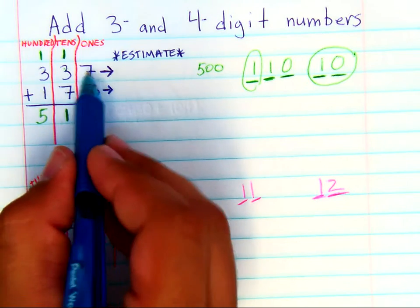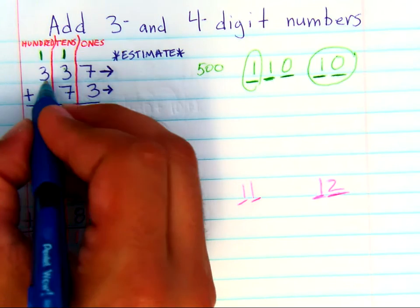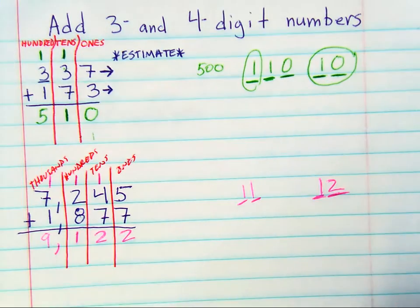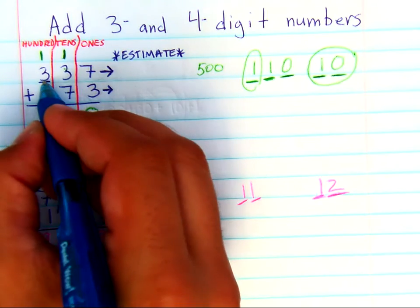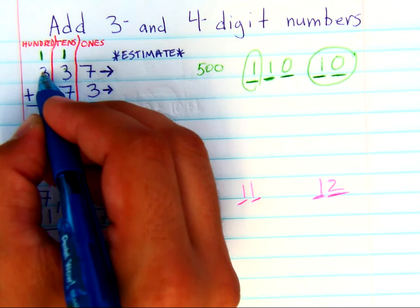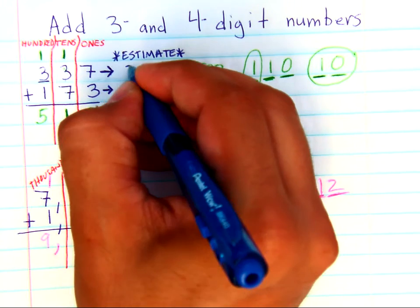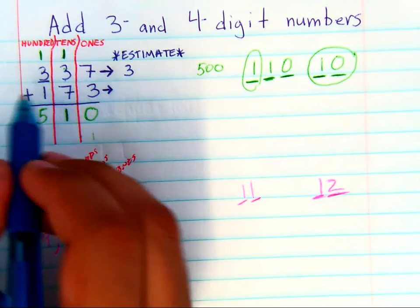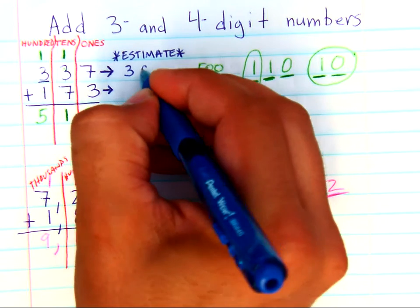So 337 will round to the nearest hundred. You find your place. Look next door. If it's five or greater, you add one more. It's not, so the number will stay the same. Numbers in front stay the same. Numbers behind zero is their name.